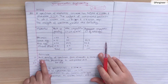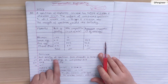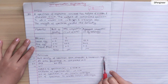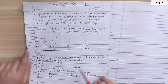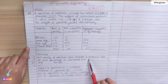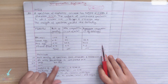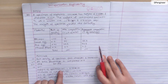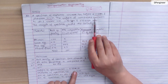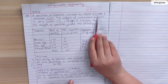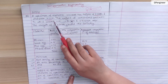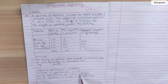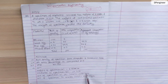Part one is the bulk density of specimen from dimension and immersion test. Part two is the air void percentage in compacted mix. The specimen height is 6.35 cm and diameter is 10.2 cm. The weight of specimen in air is 1180.5 grams.